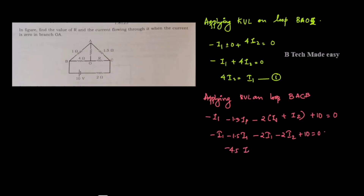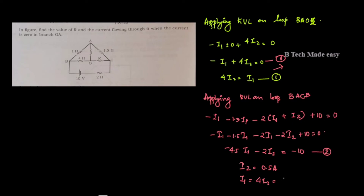That gives us: minus 4.5i1 minus 2i2 equals minus 10. This is equation number 2. We now have two equations. Solving them simultaneously, i2 is equal to 0.5 A.